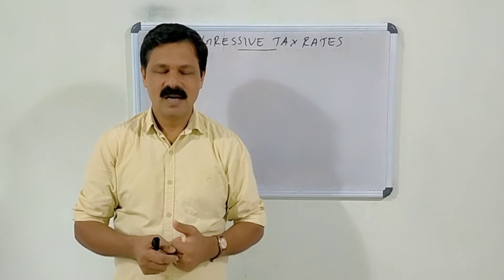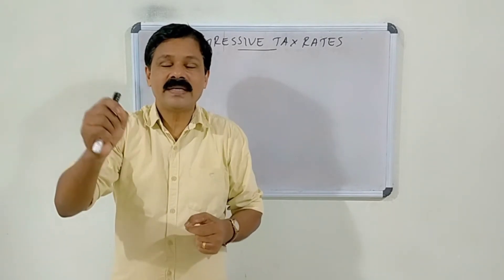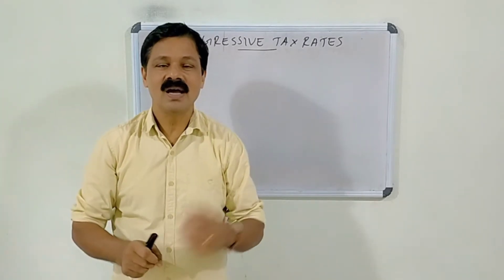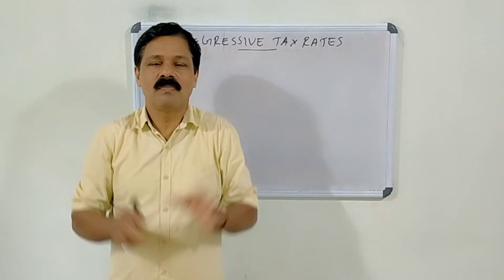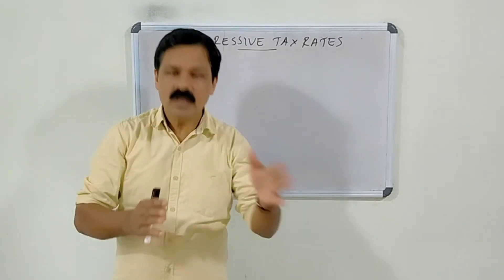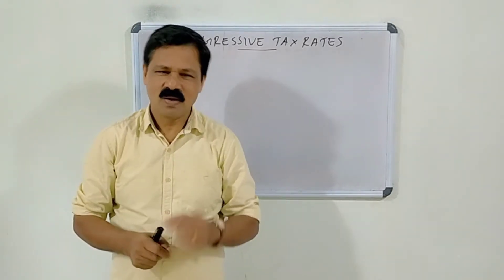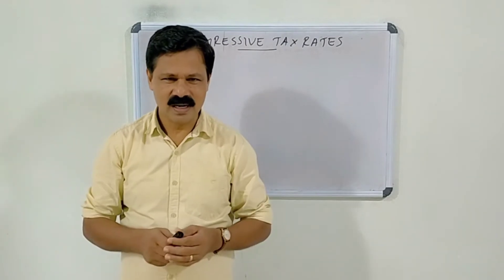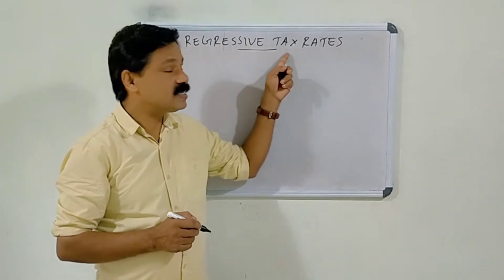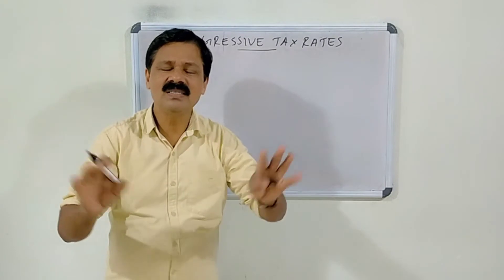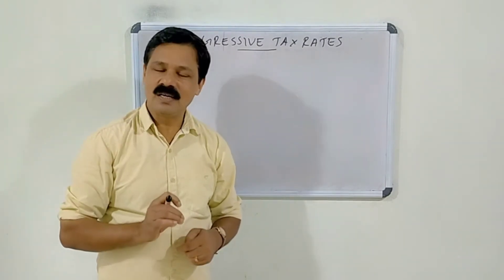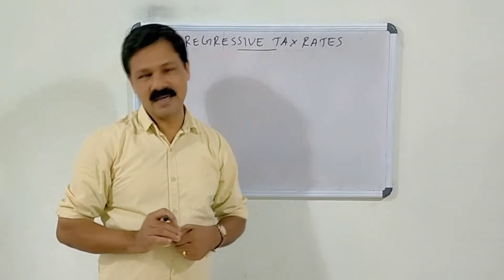As usual, the amount of tax to be paid is calculated by multiplying the tax base with the tax rate. The regressive tax rates can be easily explained with the help of a schedule and a diagram.